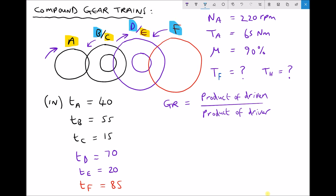Now in the formula where it says product of driven over product of driver, what we're talking about is the product of the number of gear teeth, and the product is just the multiple. So for the product of the teeth on the driven gears, we have B being driven, we have D being driven, and we have F being driven. And our drivers: we have A is a driver, C is a driver, and E is a driver.